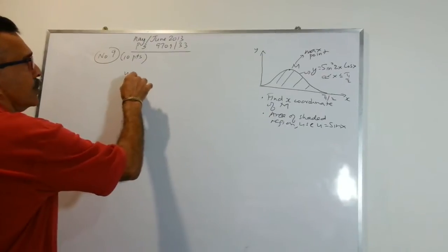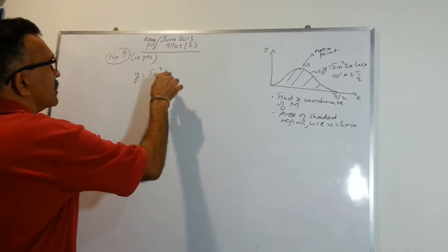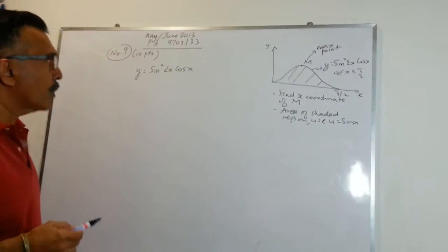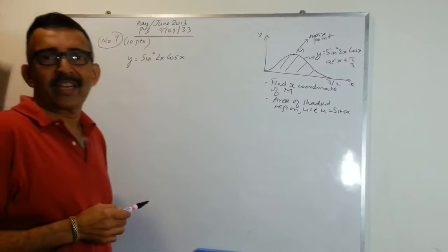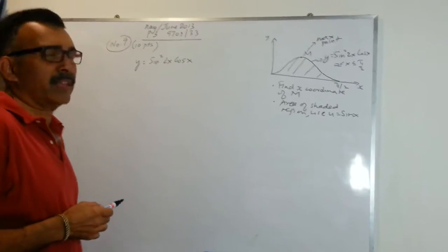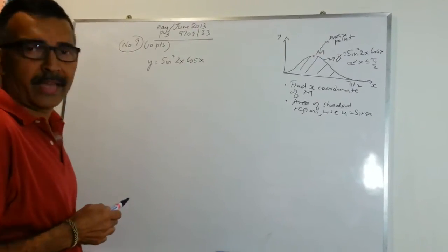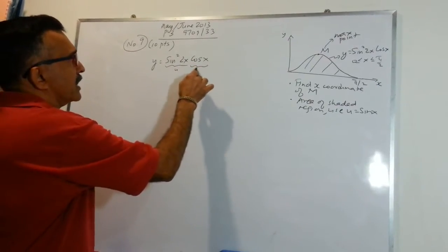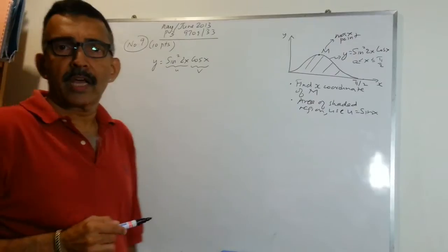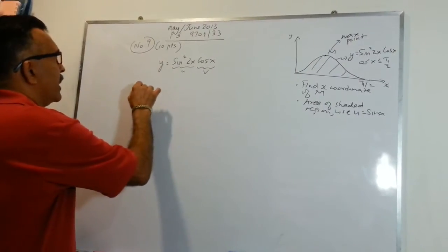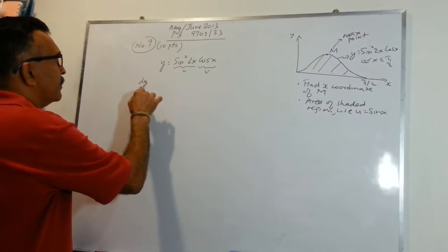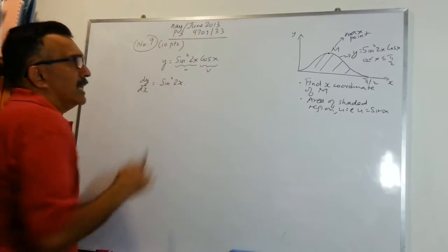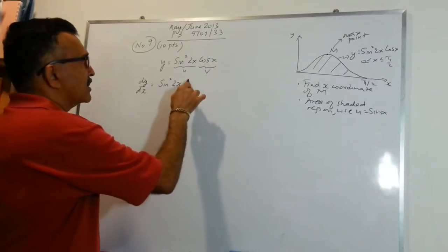We have y equals 2 sin squared 2x cos x. We want to find dy/dx and set it equal to 0 so that we can get the x coordinate of M. We are going to set sin squared 2x as u and cos x as v. We are going to use the product rule. Let's do it slowly and be careful with the differentiation. Write down the first term, sin squared 2x, and differentiate cos x to get minus sin x.